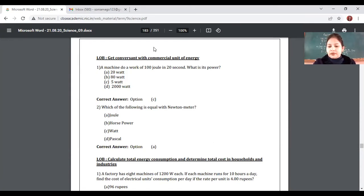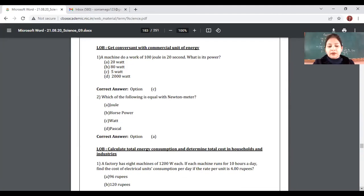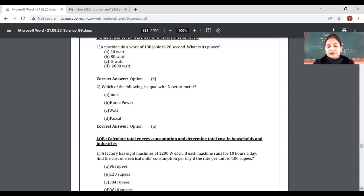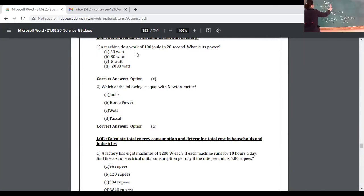Ek hi din ki cost nikalni hai, if the rate is 4 rupees per unit. Kitna answer aare hain? 5 watt. Nahi nahi, yeh toh cost nikalni hai na, rupees mein. Bill nikalni hai aapko. There are 8 machines and unko 10 hours roze chalaaya jata hai. Toh uska ek din ka kitna bill hooga? We have to tell that. These are the options in front of you. So let me solve this. The data is there. Let me note down the data.